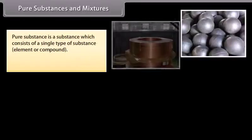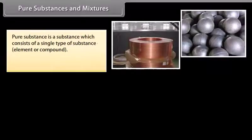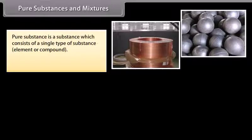On the basis of chemical composition, substances are classified as pure substances and mixtures. A pure substance is a substance which consists of a single type of substance — either an element or a compound.